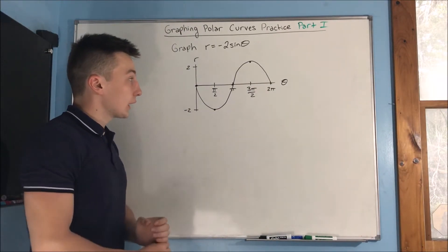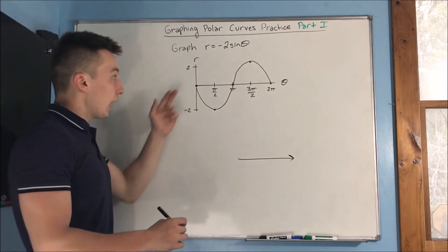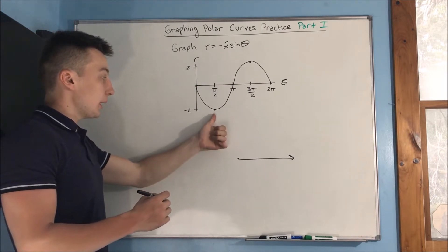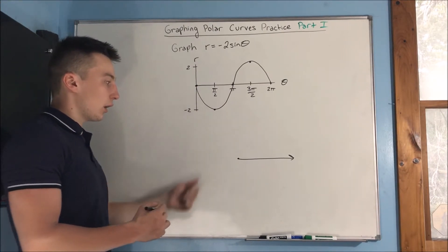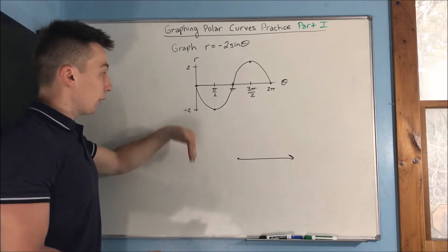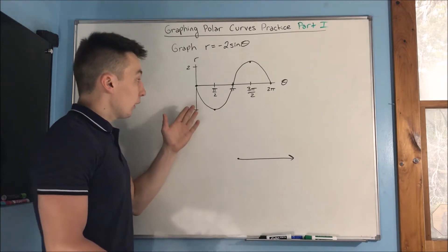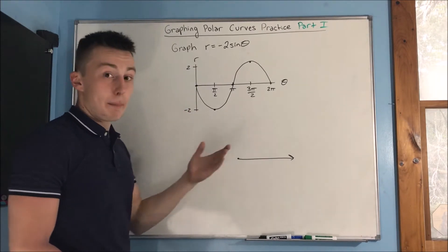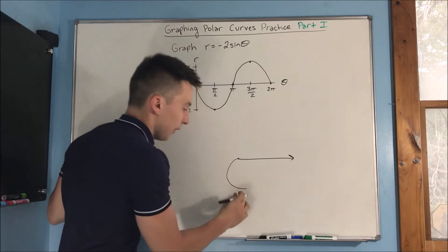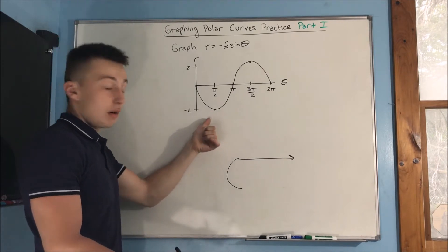Now we need to figure out what this is going to look like as a polar graph. We start at the origin, and as we approach pi over 2, the value is negative 2. So that means we're going to start off actually going in the opposite direction — we're starting off decreasing our radius a lot, which means we're getting farther from the origin quicker. It's going to level off as we hit pi over 2, since we have a negative r.